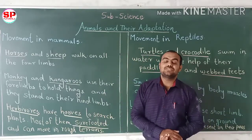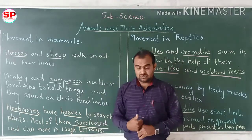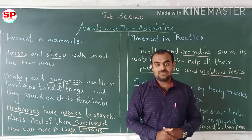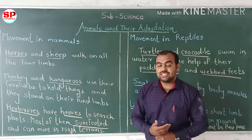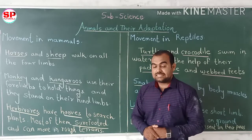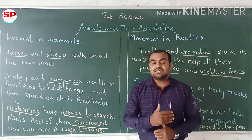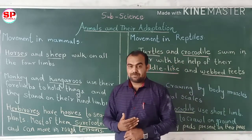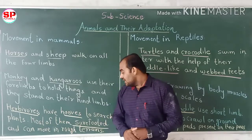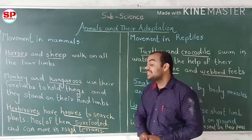Some herbivorous animals are there. Herbivorous means they eat plants. They travel long distances to find their food — plants. Most herbivorous animals are sure-footed and can move on rough terrain.